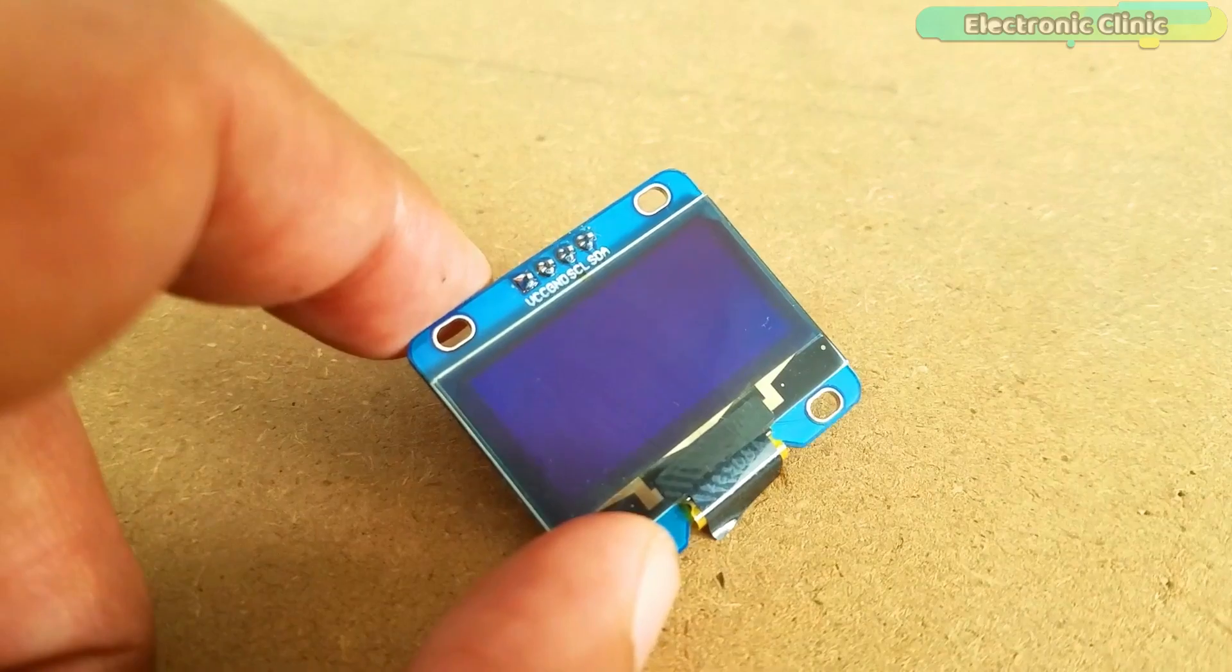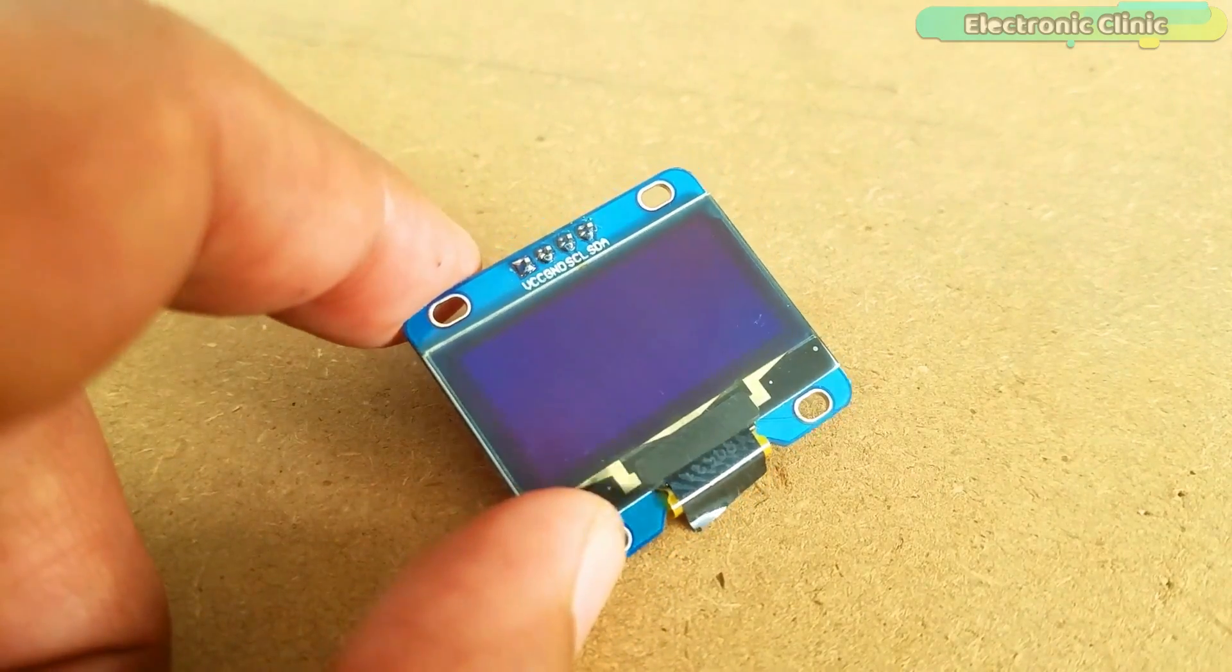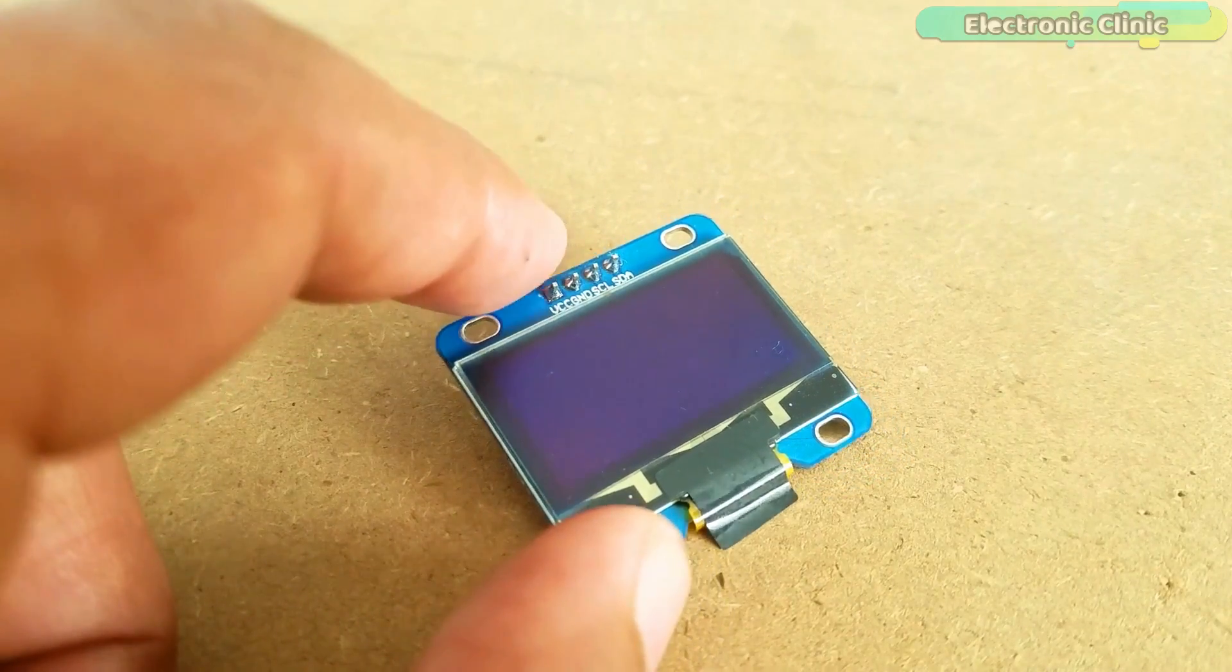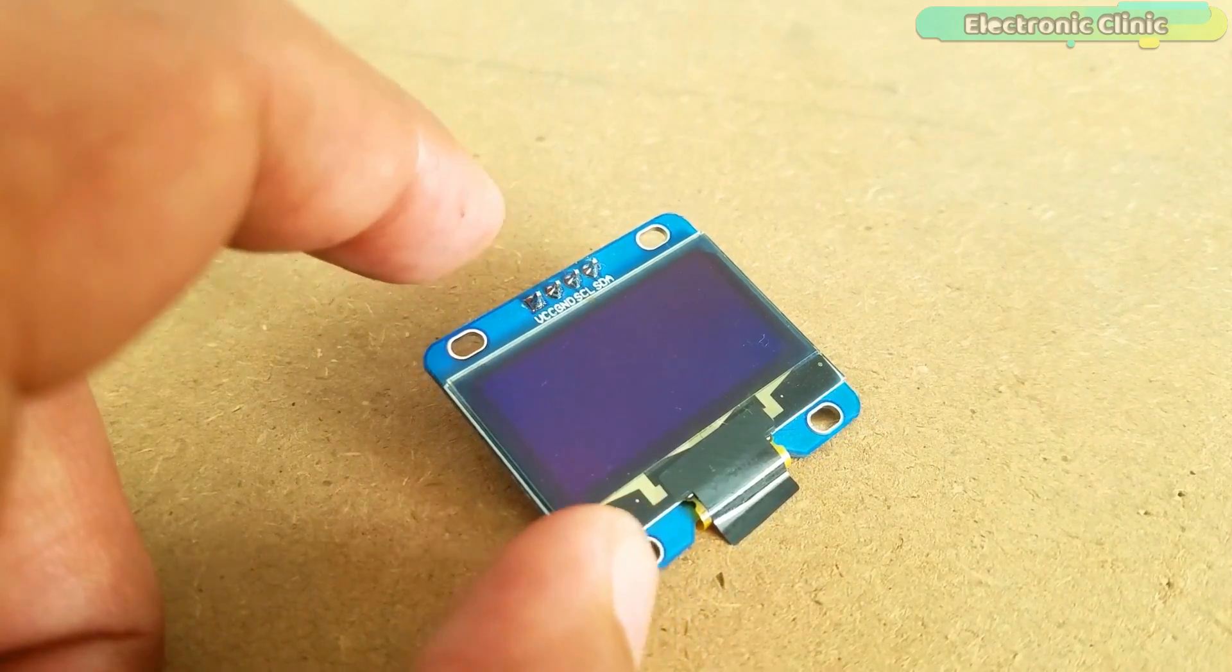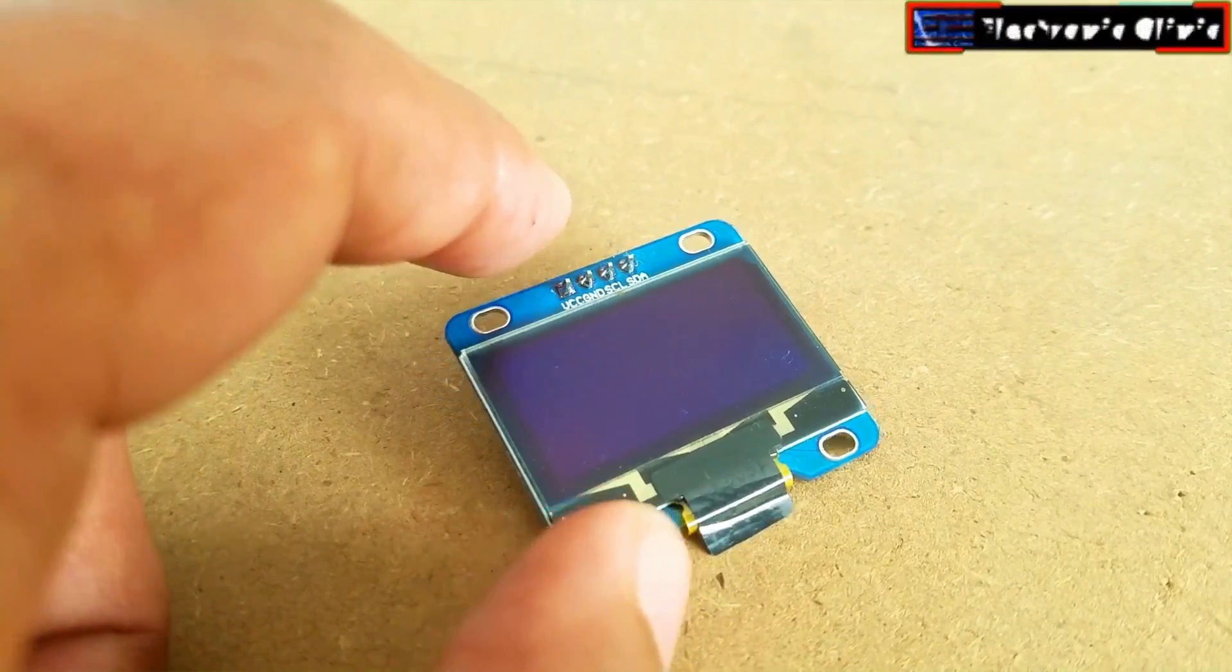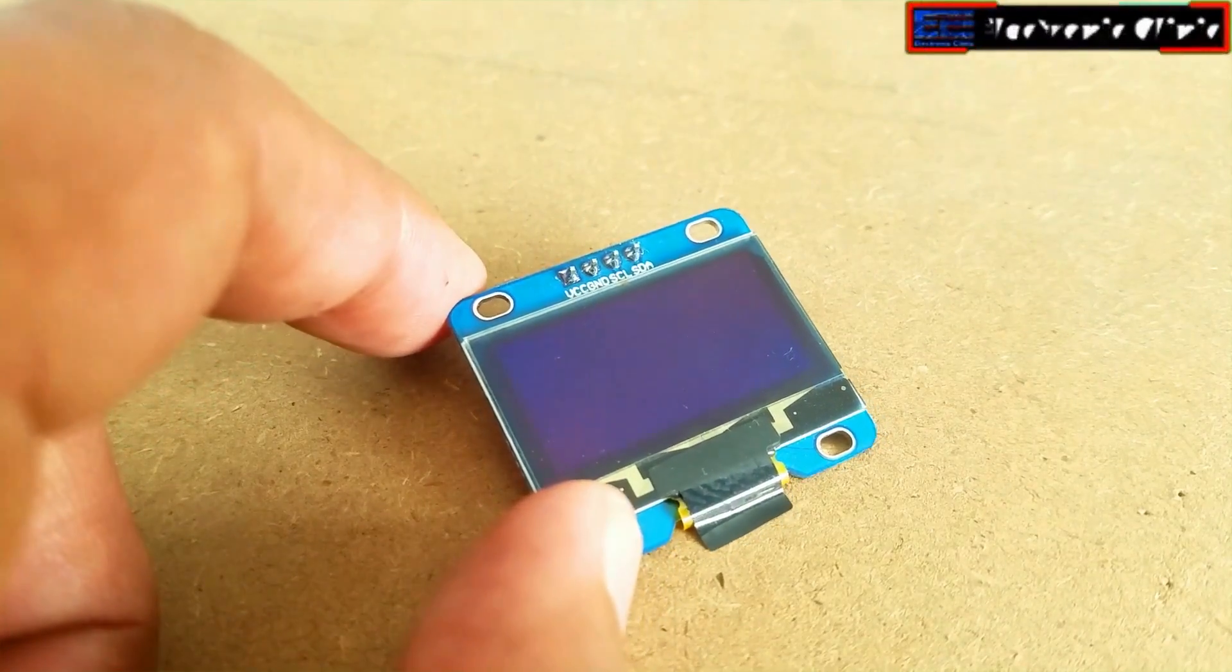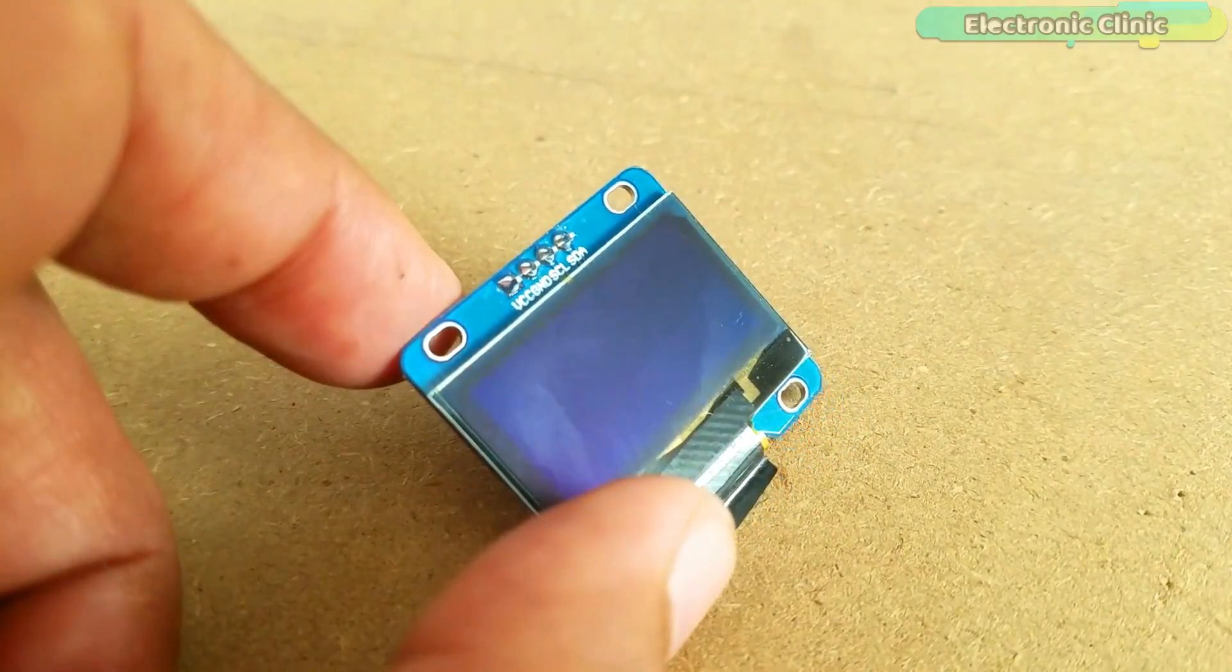This OLED display module can be powered up using 3.3 to 5 volts due to which it can be easily used with 3.3 volt supported controller ports like NodeMCU, ESP8266 module, ESP32 etc., and 5-volt supported controller ports like Arduino Uno, Arduino Mega, Arduino Nano and so on.